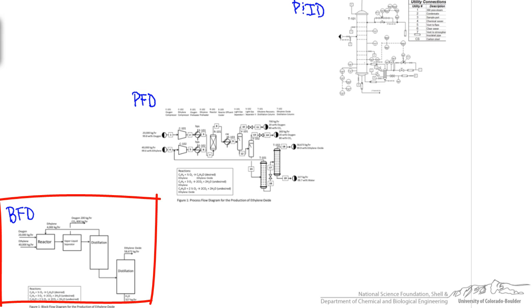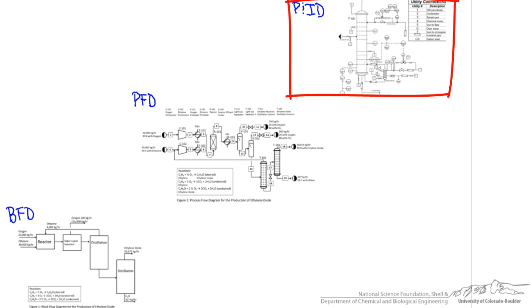Taken together, you can see that the block flow diagrams include the least amount of detail, and the piping and instrumentation diagrams the most.